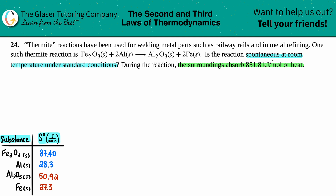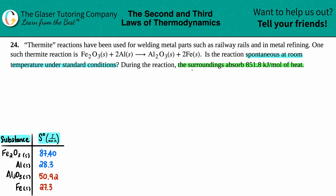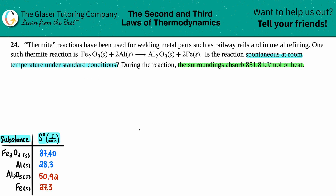The question is basically asking if this reaction is spontaneous at room temperature. We know two things: we have the balanced equation for Fe2O3(s), and we're told the surroundings absorb 851.8 kilojoules per mole of heat. Since we're talking about the second and third laws of thermodynamics, we're dealing with entropy — delta S values. To determine spontaneity at room temperature under standard conditions, we use a very special formula.